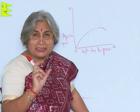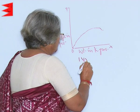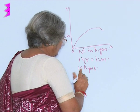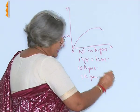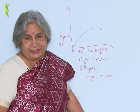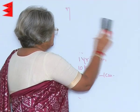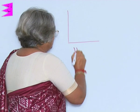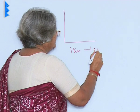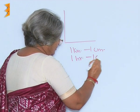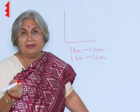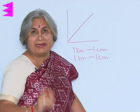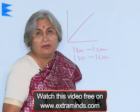For this, we take a certain scale — say 1 year equals 1 centimeter and 1 kilogram also equals 1 centimeter — and accordingly we keep making the points. Similarly, you can make a graph for speed. In this case you can take 1 second as 1 centimeter and 1 hour as also 1 centimeter, and depending upon how much distance the vehicle covered you can make a graph. It could also be a straight line if the speed has been increasing.